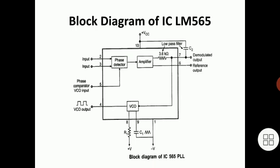The first major functional unit is the phase detector. The phase detector has two inputs: one is the external input signal and the other is the VCO output. The function of the phase detector is that it takes two inputs with different frequencies and produces a DC output voltage depending upon the phase difference between them.